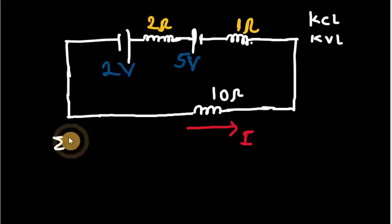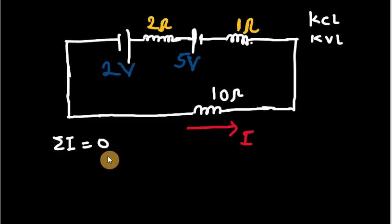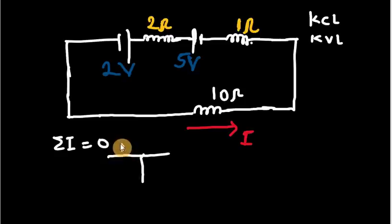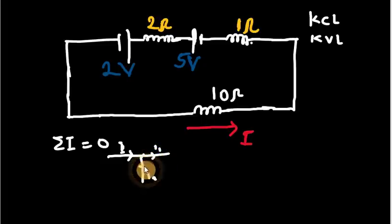Kirchhoff's current law states that the sum of the currents in a circuit equals zero. Or alternatively, if you have a junction — a point where three or more wires meet — then the sum of the current that enters through the junction equals the sum that leaves the junction. For example, if I1 and I2 are entering and one current is leaving the junction, he's saying the sum entering equals the sum leaving.